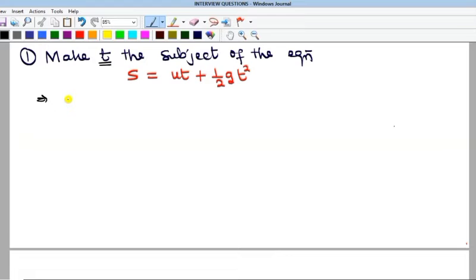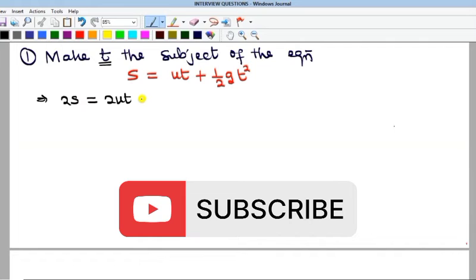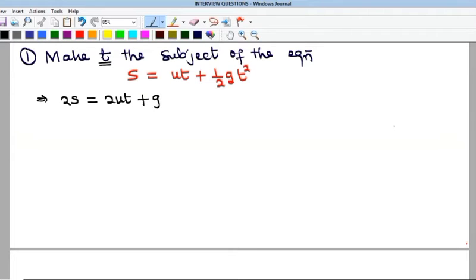And so if I multiply through by 2, I'm going to get 2s is equal to 2ut, and then what am I multiplying through by 2 is so that I will remove this fraction. And so this is going to give me gt squared.